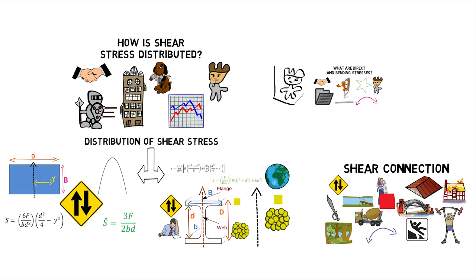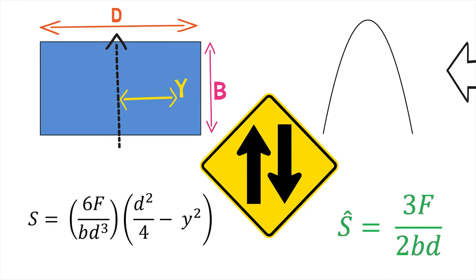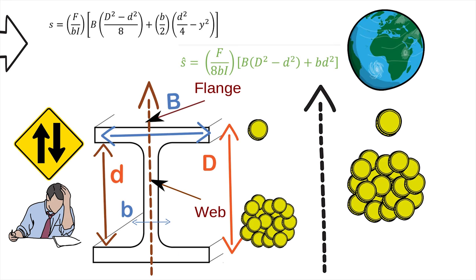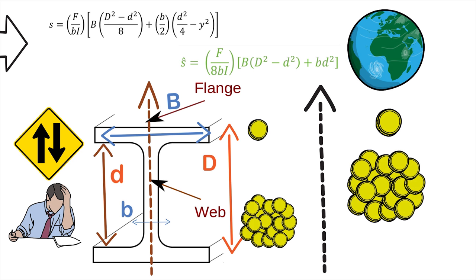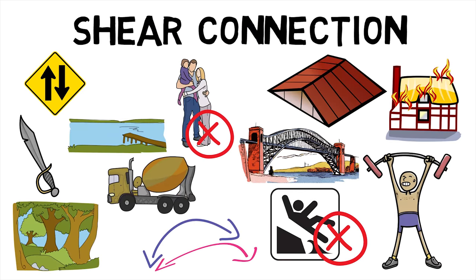Hence, we saw how shear stress is distributed, first on a rectangular cross-section and then on an I-section, and finally found out what shear connectors are.